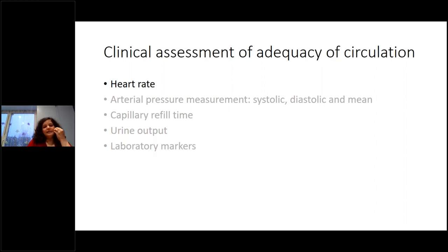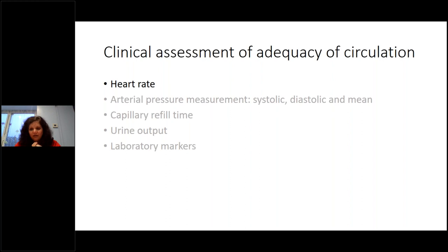Now looking at clinical assessment of adequacy of circulation. First, heart rate: an initial tachycardia is the baby trying to compensate for low blood pressure. But the baby is already running a very high heart rate, so if it becomes more tachycardic, it doesn't improve peripheral circulation — it is an indicator that something is wrong and we need to treat it.